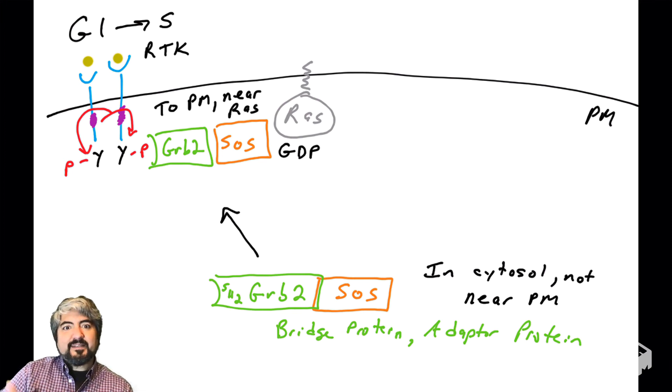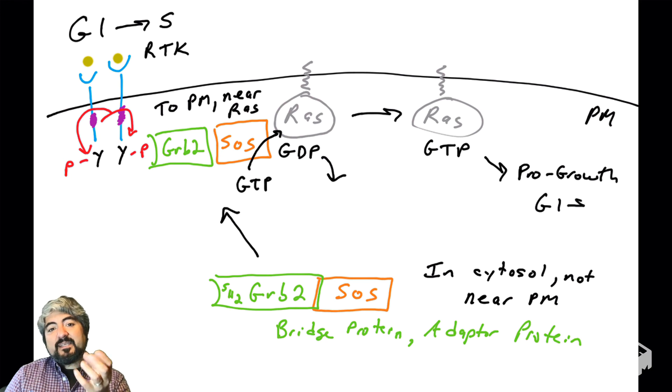What does GRB2 bind as well? GRB2 binds SOS on another side. Now notice where SOS is. SOS is now near the plasma membrane, localized very close to RAS. You wouldn't say its substrate because SOS is not an enzyme - it doesn't enzymatically act on RAS - but it acts upon RAS as an exchange factor. It's brought near the protein that it acts upon. Now that it is near RAS, what can it do? It can take out that GDP, put in a GTP, and now RAS is bound to GTP. We'll see in a later video how that stimulates pro-growth signals into the cell.